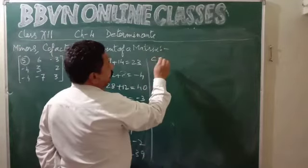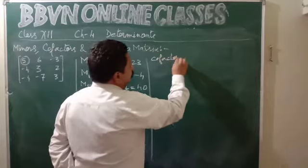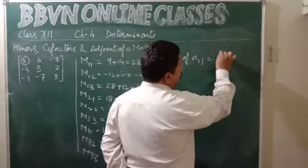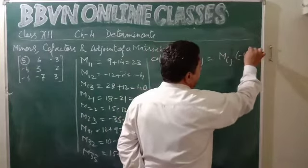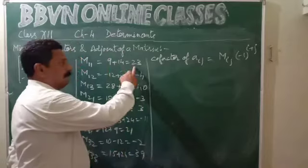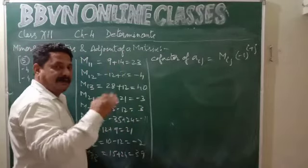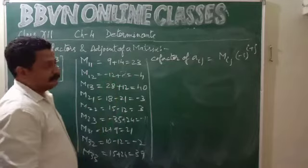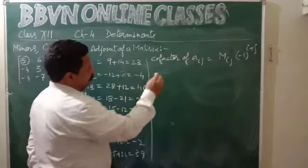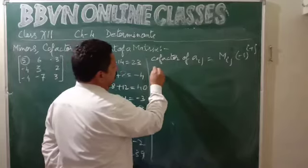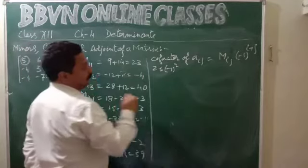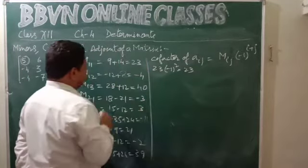Now, cofactor of Aij is equal to minor of Aij multiplied by minus 1 to the power i plus j. What we have to do is each minor will be multiplied by minus 1 to the power row plus column. So cofactor of A11: minor 23 multiplied by minus 1 to the power 1 plus 1, which equals 2, so this becomes 23.